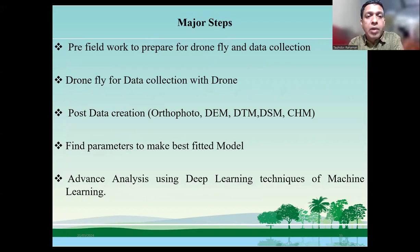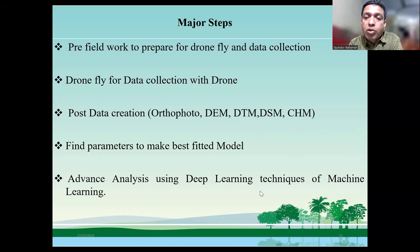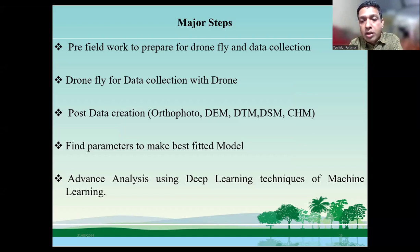The major steps included field work to prepare drone flights, because all photos were taken automatically by considering ground sampling distance and front-side overlap. We created high-resolution orthophotos like satellite imagery but at very high resolution — around two to three centimeter resolution. We also created digital elevation models, which give us information about the height of a particular area. The DTM gives terrain information, and the canopy height model gives us information about tree height and other object heights like buildings within the region of interest. Another major step was finding the parameters to make a best-fitted model for this automation process using deep learning techniques.